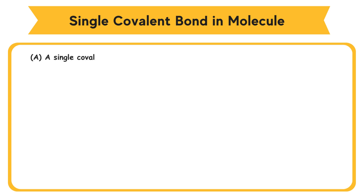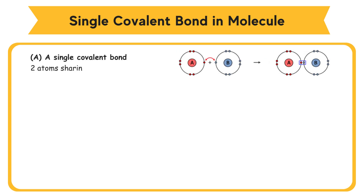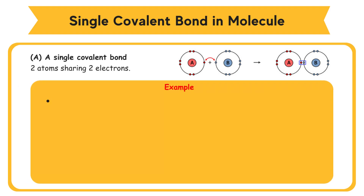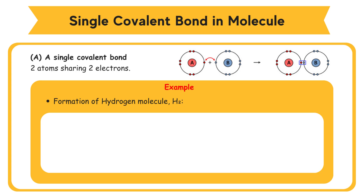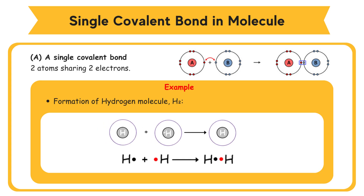Formation of Single Covalent Bond and Molecule. A single covalent bond can be defined as the result of two atoms sharing two electrons to form a chemical bond. Example: formation of hydrogen molecule H2. The electron arrangement of a hydrogen atom is 1. A hydrogen atom needs one electron to achieve a stable duplet electron arrangement. Two hydrogen atoms H each contribute one electron for sharing. Two hydrogen atoms share one pair of electrons to form a single covalent bond. A hydrogen molecule H2, a covalent compound, is formed.